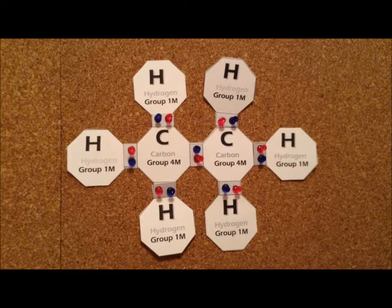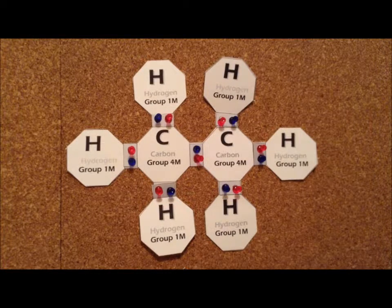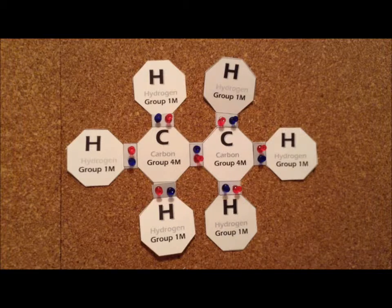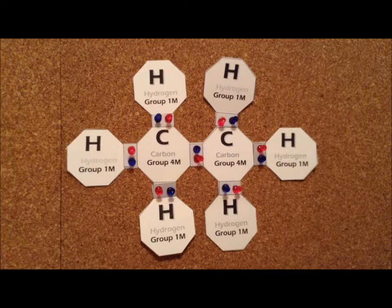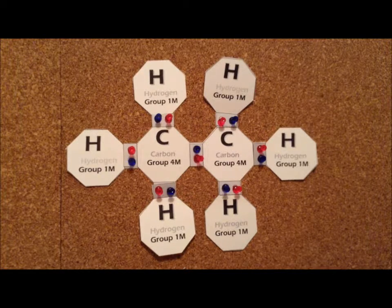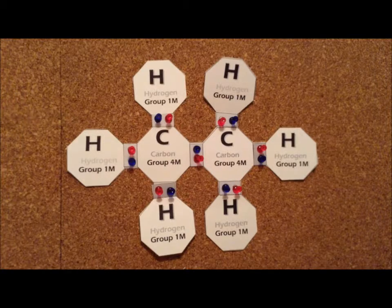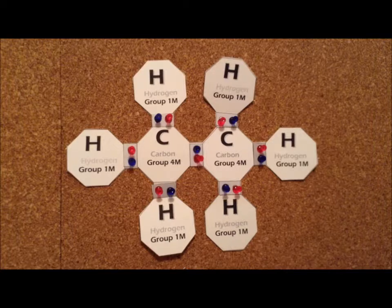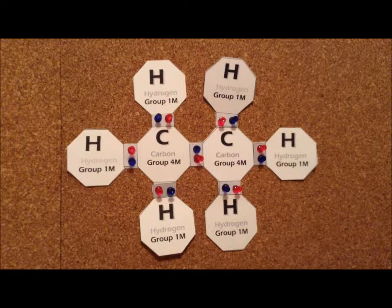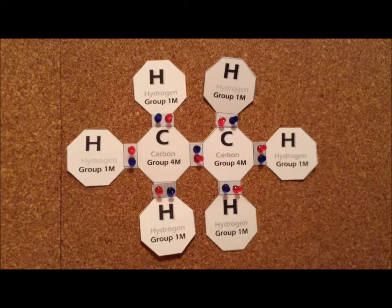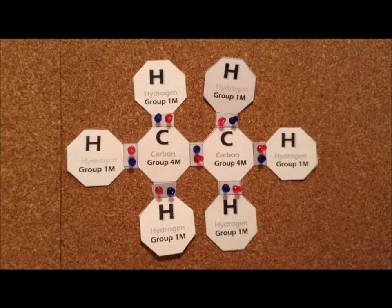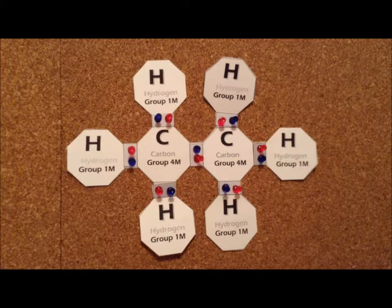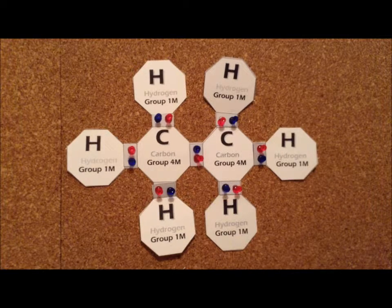The chemical compound ethane has the chemical formula C2H6. One thing we notice about this compound is that we have twice as many hydrogens as carbon plus 2. So if we have a Cn molecule, we end up having 2n plus 2 hydrogens as we do in this case.